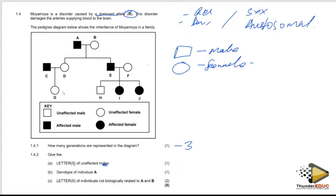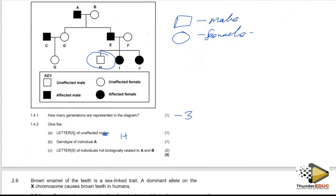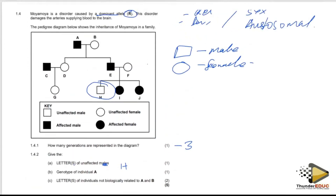They are saying an affected male — a box which is shaded is affected. I look through the diagram and find there is only one person who is an affected male, so the answer is H. That is why it is also worth only one mark.